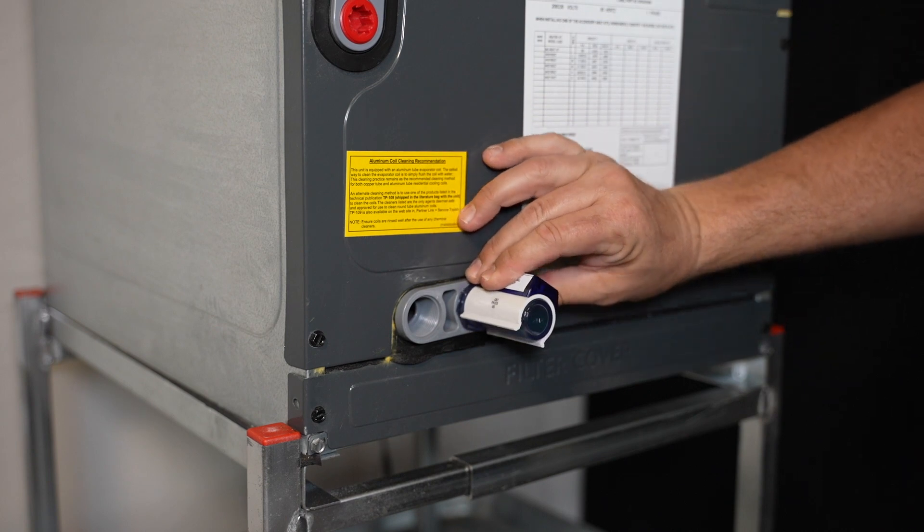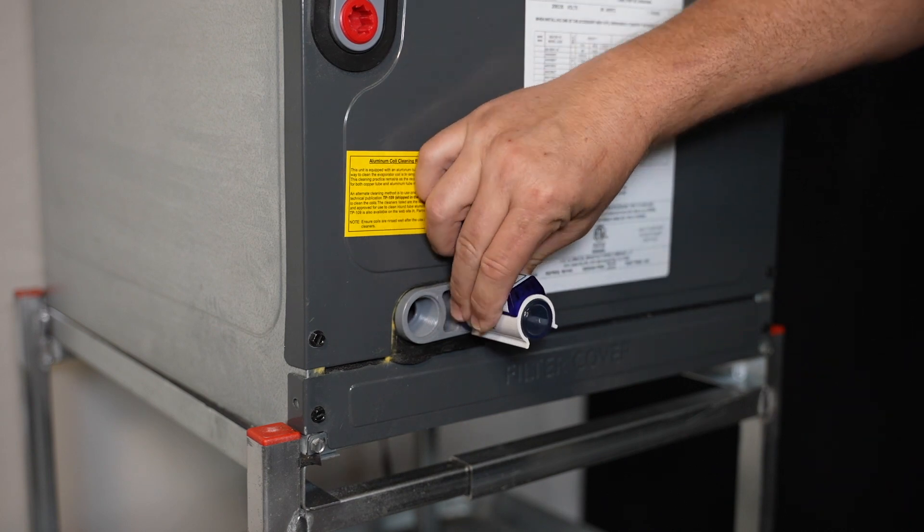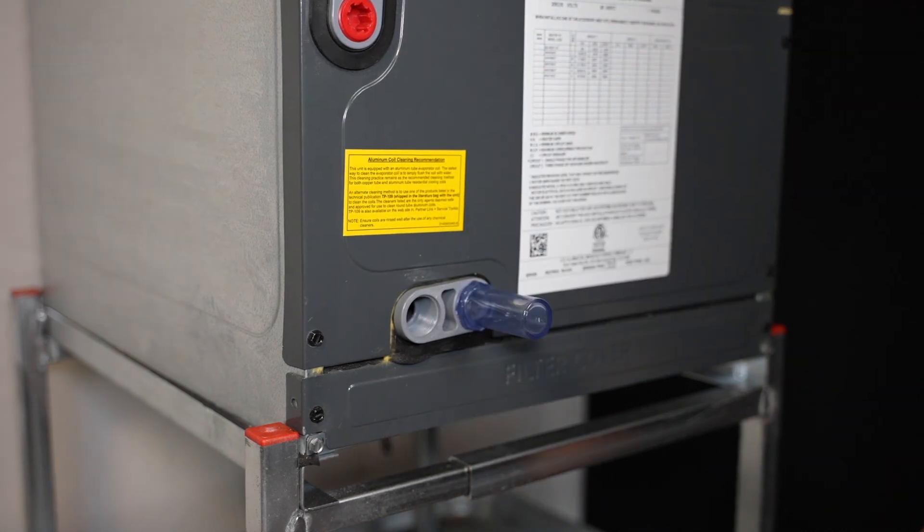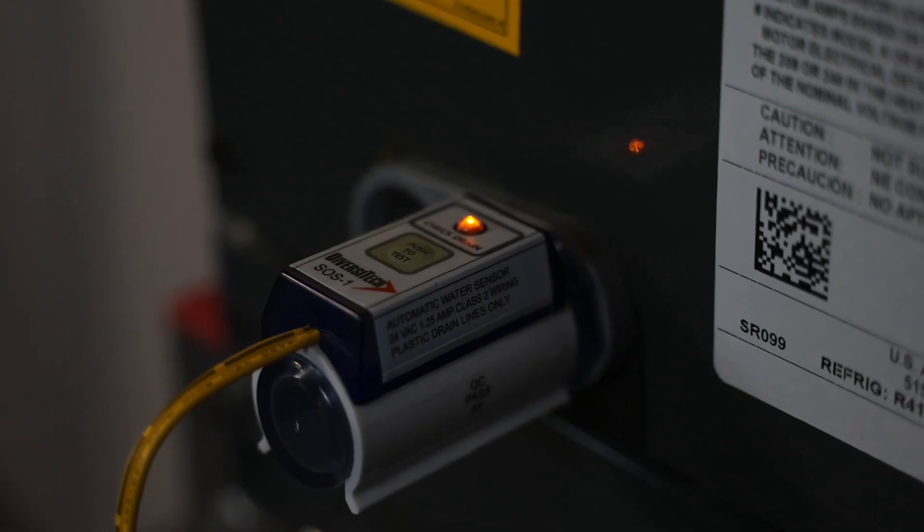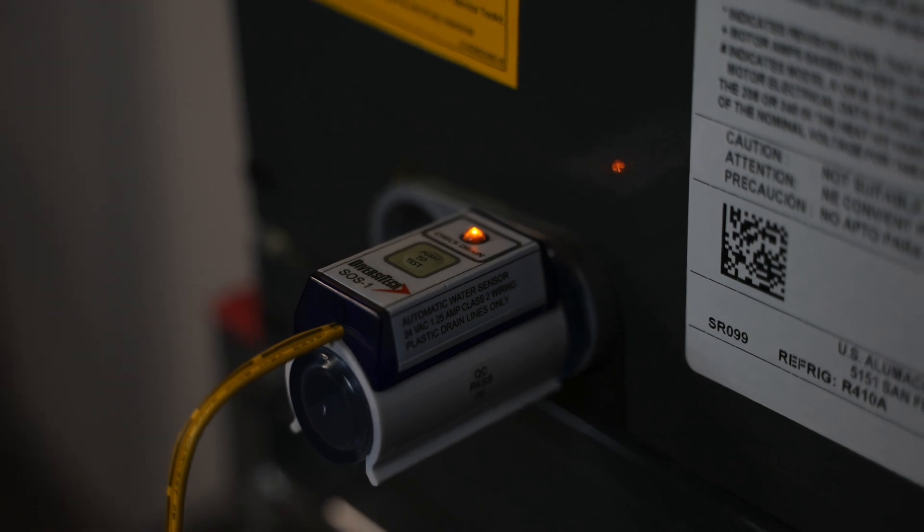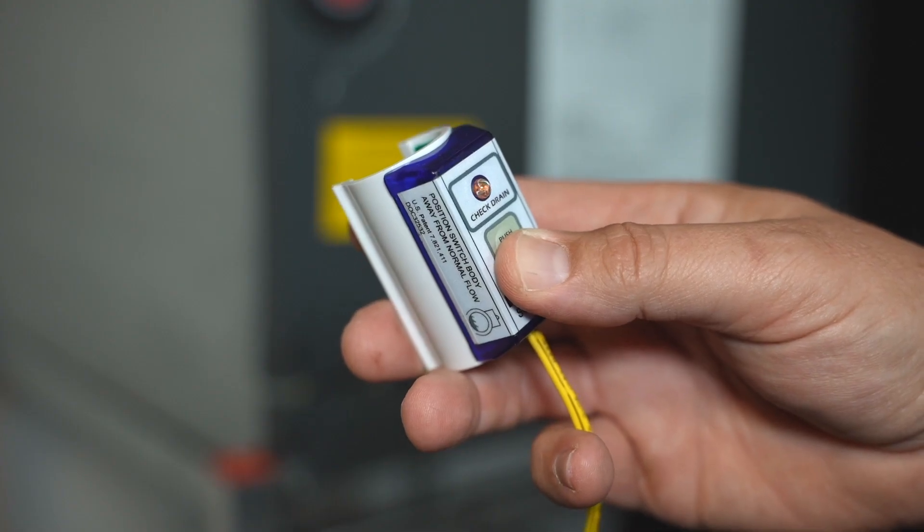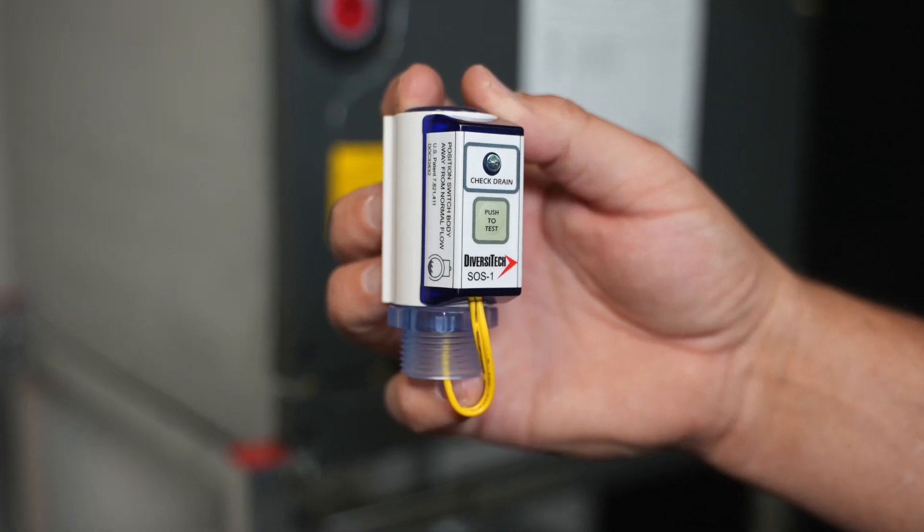You can easily adjust sensitivity by adjusting the orientation on the pipe. The clear adapter provides an easy view of the primary pan condition. The LED illuminates when the condensate line is blocked. The switch works with non-communicating systems and is made for standard drain lines.